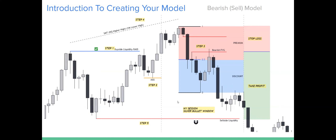The next step — this is a real chart example of a bearish setup. These dotted lines represent the silver bullet window — New York session, silver bullet window. We have buy-side above this high here, above these highs. Step one: rolling into the silver bullet window, we can see price taking out buy-side liquidity. If I'm looking for lower prices on the day, I want to see all the buyers taken out of the market.